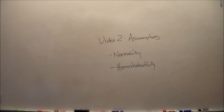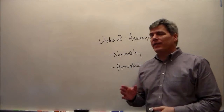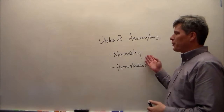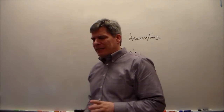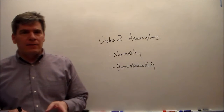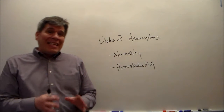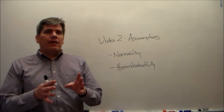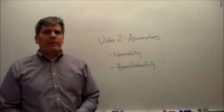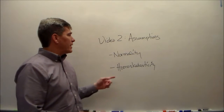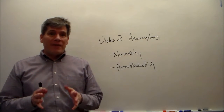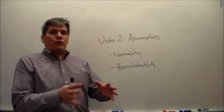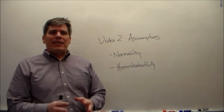Here we are with video two, looking at the assumptions of that one-way analysis of variance. We've got the two assumptions here: normality and homoscedasticity. Normality means that the data within each of the groups are normally distributed. Homoscedasticity means that the population variances for each of the groups is equal.